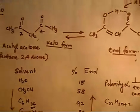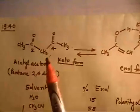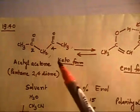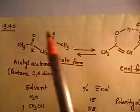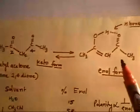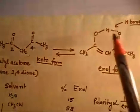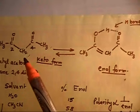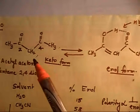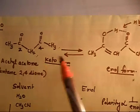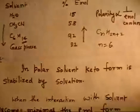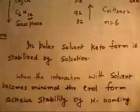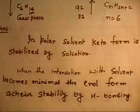In a polar solvent, the keto form gets stabilized, so the equilibrium tends to shift toward the keto form. In a very non-polar solvent, the keto form does not get stabilized, so the equilibrium shifts toward the enol form. The enol form is always stabilized by intramolecular hydrogen bonding. In polar solvents, the keto form is stabilized by solvation; when interaction with solvent becomes minimal, the enol form achieves stability through hydrogen bonding.